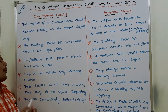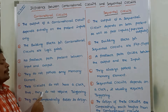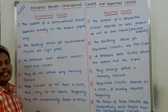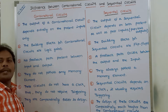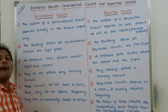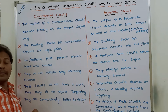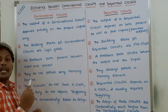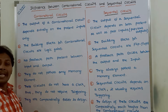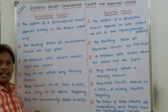Fifth point: combinational circuits do not have a clock, and thus they do not require any triggering. In the case of combinational circuits, there is no requirement of any clock. Clock is used for driving the circuit, but in the case of combinational circuits, there is no such requirement, and because of that reason, they do not require any triggering.